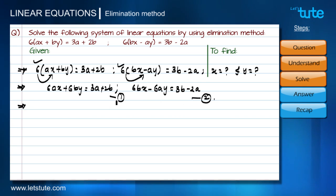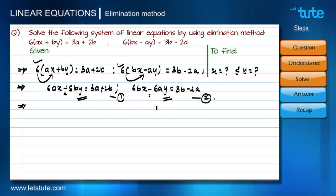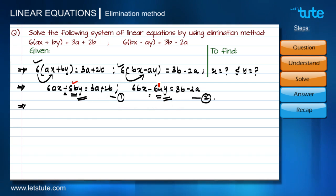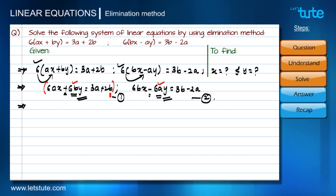Before solving using the elimination method, I need to decide which term to eliminate. I've decided to eliminate the y term. Since the y terms have opposite signs, I will add the equations. But first, I need to make the coefficients of y equal — I have 6b in one equation and 6a in the other, so I'll multiply equation one by a and equation two by b.